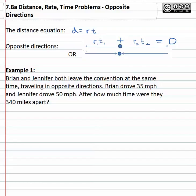We get a similar relationship if they're starting at opposite points going toward the center. The rate of the first person times their time gives the distance that first person traveled, and the rate of the second person times their time gives the distance the second person traveled. Adding those distances together gives the total distance.